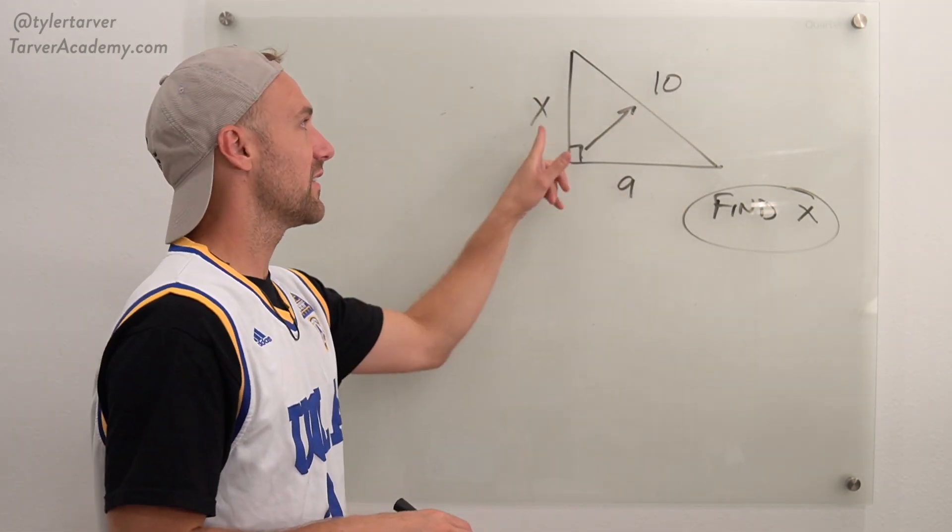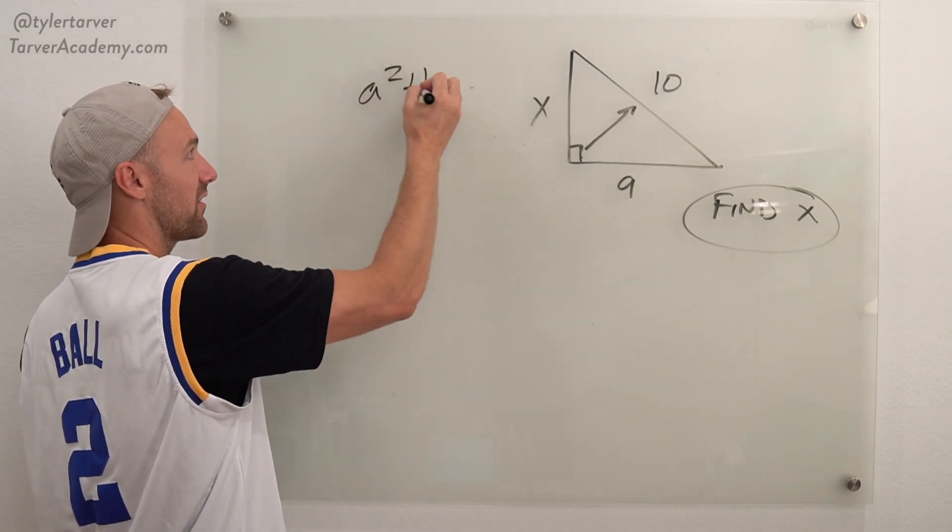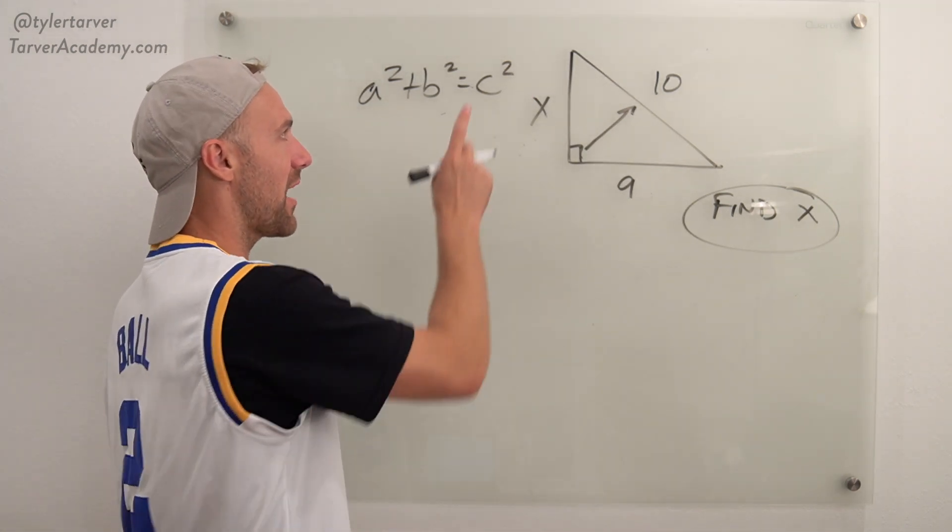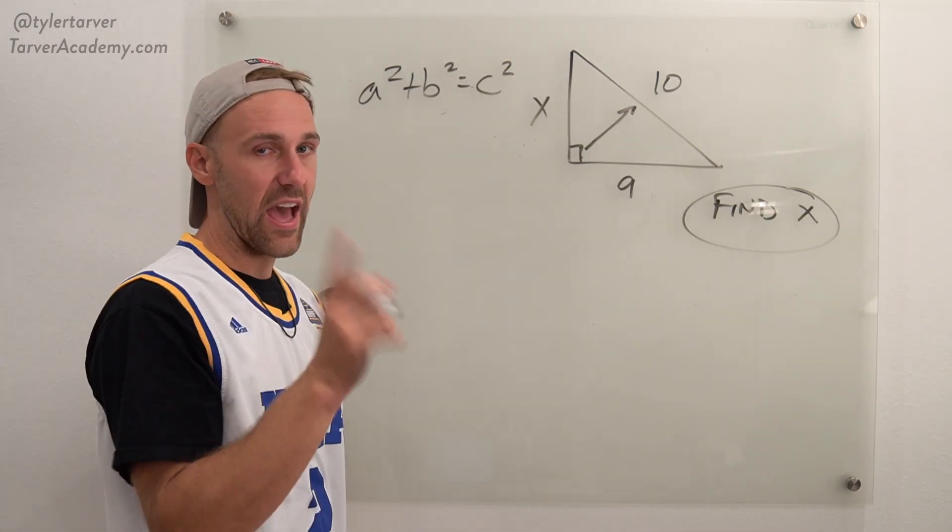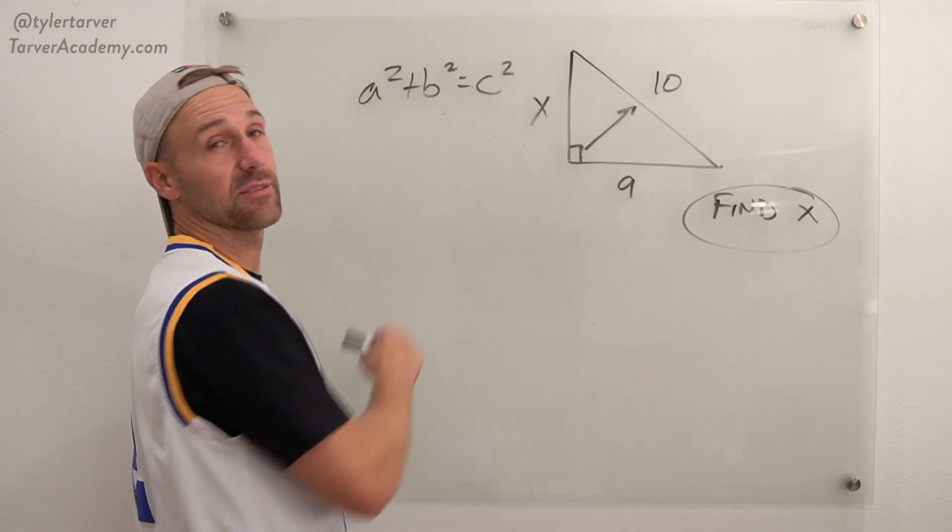This one is 9. This one's X. So with the right triangle we're using Pythagorean Theorem. Now with Pythagorean Theorem the one that matters is C. That has to be your hypotenuse. The other two you can get them flip-flopped. C has to be your hypotenuse.